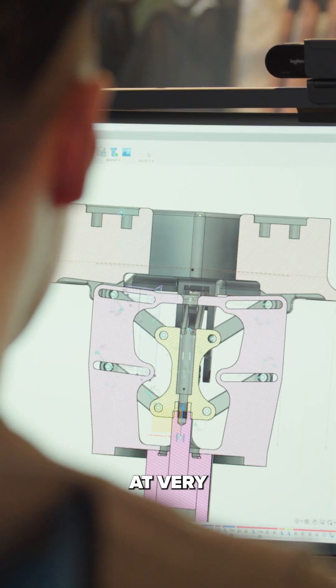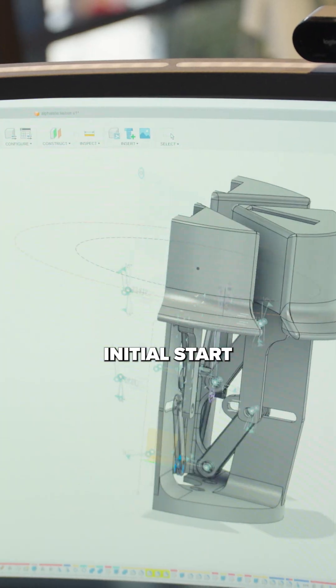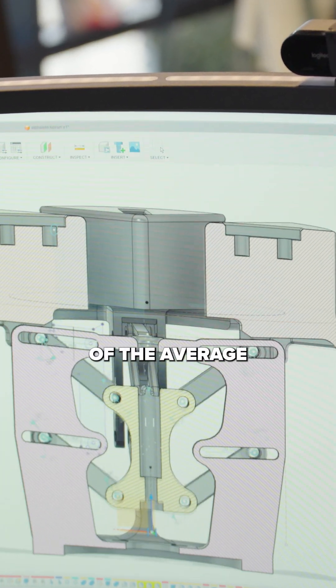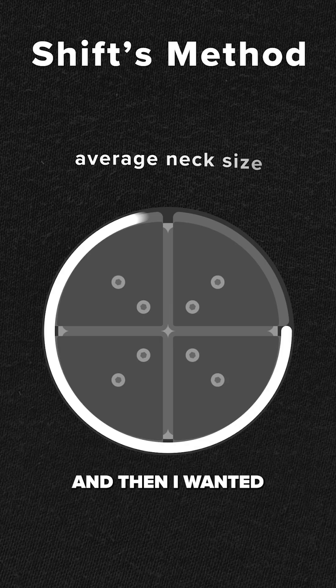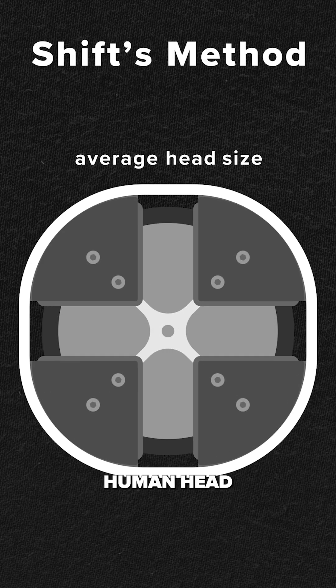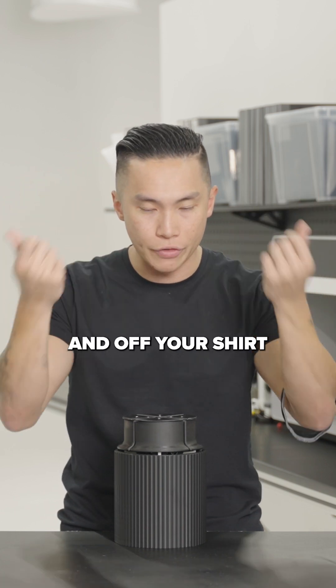When I designed this, I was looking at very specific parameters. I wanted the initial start position to be representative of the average human neck, and then I wanted to expand to the average human head. So it'd be very representative of you taking on and off your shirt.